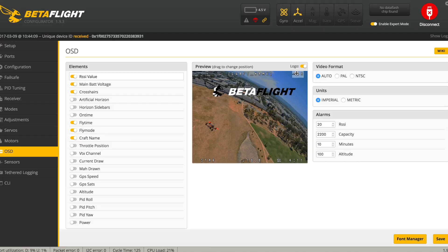and then I have my craft name my RSSI here, the crosshairs in the center of the screen and then your flight mode, your current battery voltage which is obviously the most useful